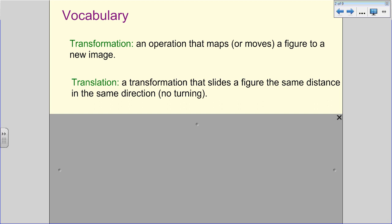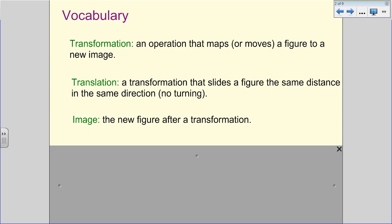So now we have what a translation is. A translation is a transformation that slides a figure the same distance in the same direction, no turning. So our figure could be, for example, if you look at the bottom of the page, a car. And so we're going to slide that car. It's going to keep the same direction, and all the wheels are going to travel the same distance. It could be a line segment. Each endpoint of that line segment is going to travel the same distance in the same direction. And so now we have this word image. The image is just the new figure that you get after any transformation.